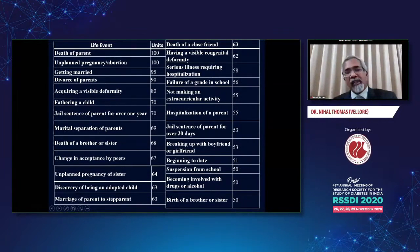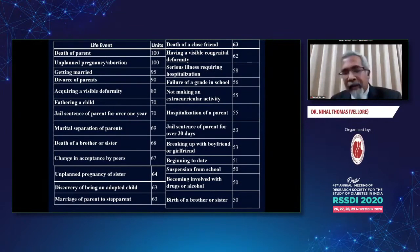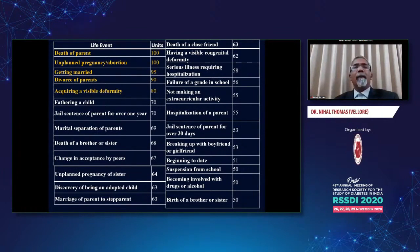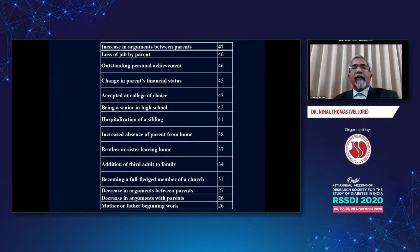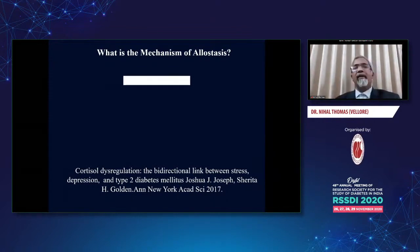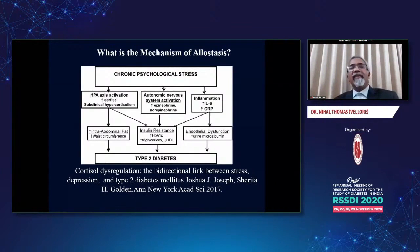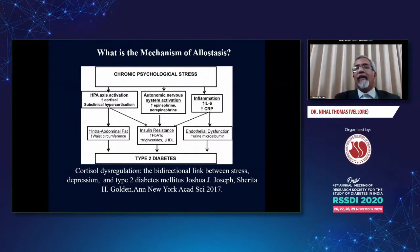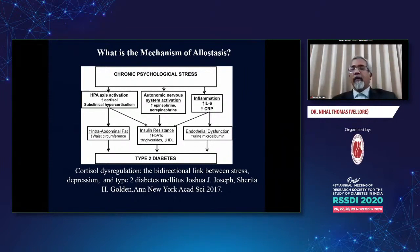I have listed a number of points with scoring systems. For example, if a parent has died the psychological stress is about 100 points; a teenage pregnancy or miscarriage around 100 points; divorce of parents about 90 points. This was developed outside India and would obviously need revalidation and modification within our population, but the issue of school going and academic stress is something really important in our population. The mechanism of allostasis is essentially cortisol dysregulation — there's a bidirectional link between stress, depression and type 2 diabetes. With chronic psychological stress you can have stimulation of cortisol production by the HPA axis, increased catecholamine production, and also inflammation. All three put together can lead to the precipitation of type 2 diabetes in young people.